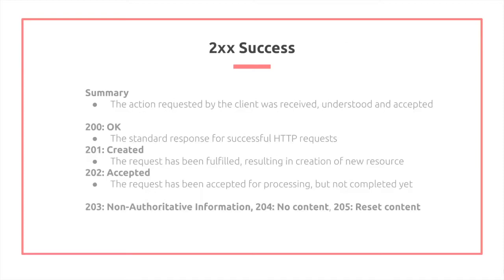The 200s mean success. 200 specifically refers to OK — it means that you had a successful HTTP request. 201 specifically means that the resource has been created; for example, you could have created a file on some sort of file system. 202 means that it was accepted, but it was not yet completed.